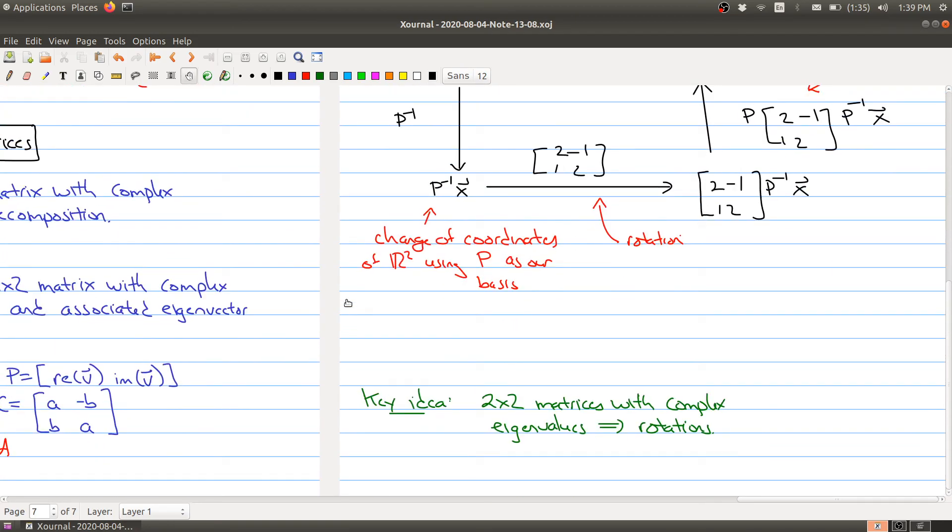There's a lot of stuff happening here today. One of the key ideas you should take away is that when you're looking at two by two real matrices with complex eigenvalues, what's happening in the background is you're getting rotations showing up in terms of your matrix. That's it for today. I hope you enjoyed the lecture and I will see you in lecture 35.